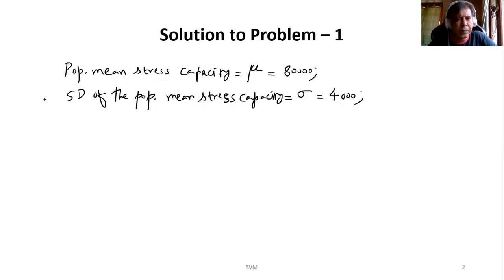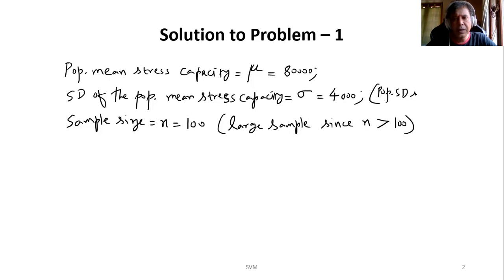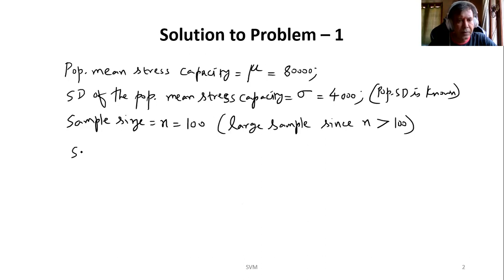The sample size is given as 100, denoted by small n. We can conclude that this is a large sample because it is greater than 30. Since n is large, and the population standard deviation is known — it is already given in the question. The sample mean for the sample drawn, which is the mean stress capacity, is 79,600. Since it is the sample mean, we use the notation x-bar, given as 79,600.